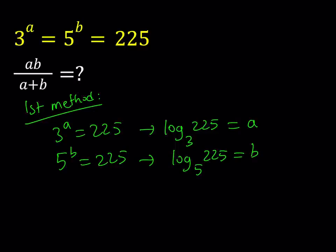You can also get the same results if you take this expression 3 to the power a equals 225 and log both sides with base 3. You're going to bring down the a, and log base 3 of 3 is just 1. That way you'll get a equals the same thing. So we were able to get a and b numerically.